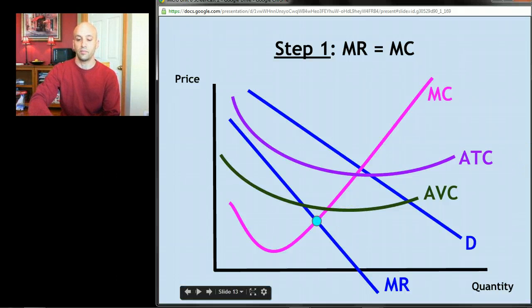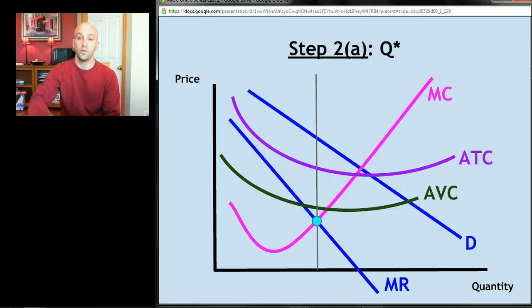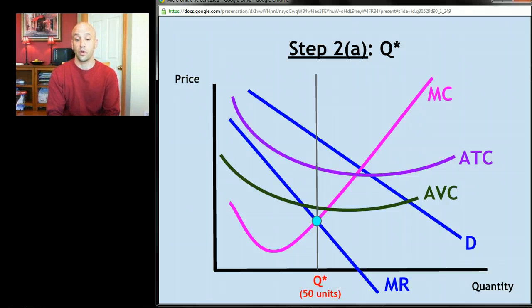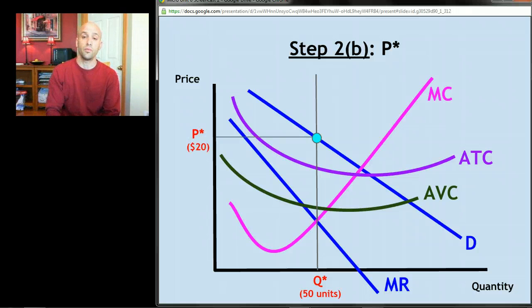Step two: just like with monopoly, draw your reference line straight up and down from that dot. If you follow that reference line down to the quantity axis, you get the profit-maximizing quantity — let's call that 50 units. Now, just like with a monopoly, monopolistic competitors charge the highest price they can to sell that profit-maximizing quantity, so they jump up to the demand curve to choose their price. P-star would be right there — let's call that twenty dollars.